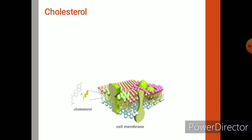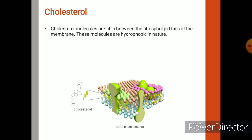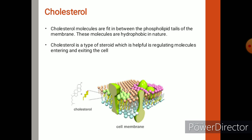Another important structure present in the cell membrane is cholesterol. Cholesterol is a type of steroid that can fit into the spaces present between phospholipid tails. These molecules are hydrophobic in nature. Cholesterol helps in regulating which molecules enter and exit from the cell. It also holds the phospholipid molecules together so that they don't separate. Without cholesterol, the phospholipids would start to separate from each other and leave large gaps.